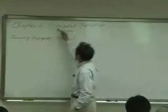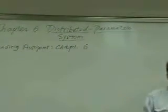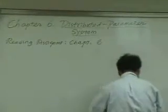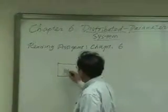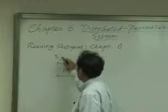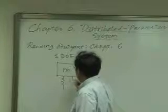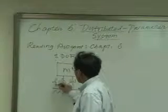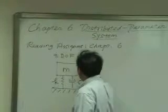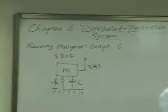Why do we call it a Distributed Parameter System? What does that mean — Distributed Parameter System? We learned about the vibration of a single degree of freedom system, which is composed of mass, spring, and dashpot. We use one coordinate, therefore we call this a single degree of freedom system.